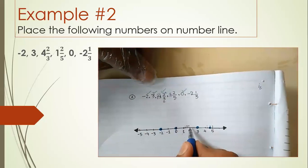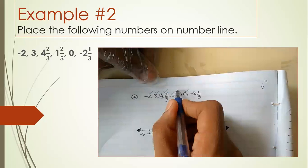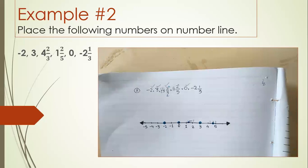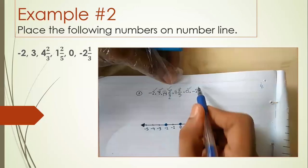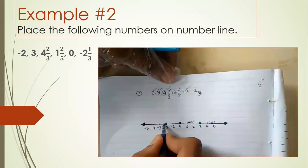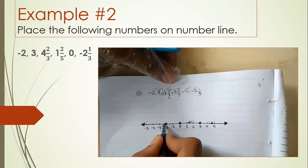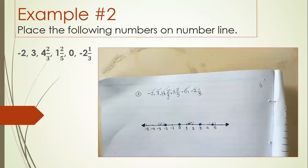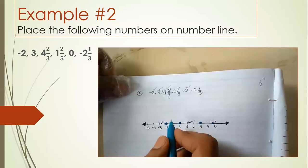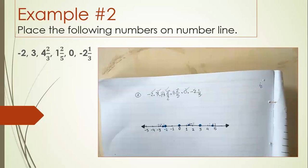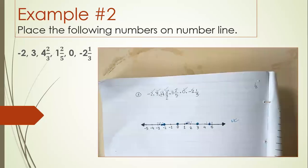The numerator was two, so we mark on two. For the third fractional form, minus two and one-third: minus two is here, three is the denominator so we break it into three equal parts, and we mark on one.